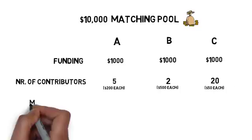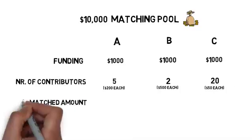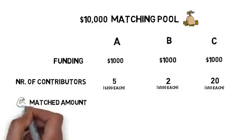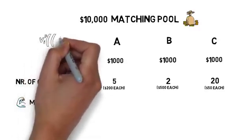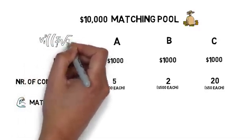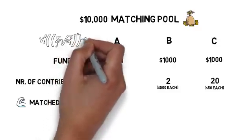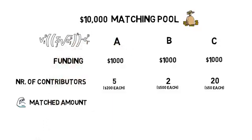Let's have a look at the matched amounts to see the power of quadratic funding. Matched amounts are calculated by using the quadratic funding formula where the amounts received by the project is proportional to the square of the sum of the square roots of contributions received.